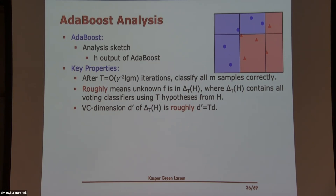An important question: the weak learner definition requires it to work for any distribution D. That's actually very important — in particular it needs to work for all the different weight distributions that AdaBoost is going to place on the training data. The definition of weak learner requires it for any distribution.